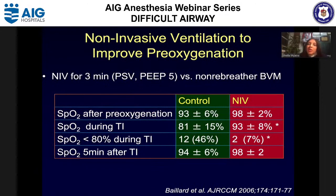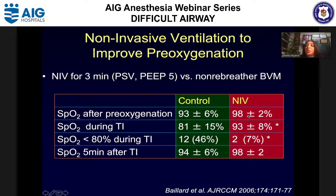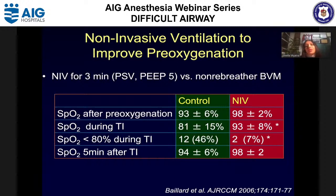Evidence for NIV improving pre-oxygenation: an early study found significantly higher saturation during tracheal intubation when patients were pre-oxygenated using NIV with pressure support and PEEP compared to conventional oxygen. Episodes of saturation falling below 80% were much lower in the NIV group. NIV is superior to conventional oxygen therapy in these high-risk patients with lung pathology, pneumonia, or ARDS.